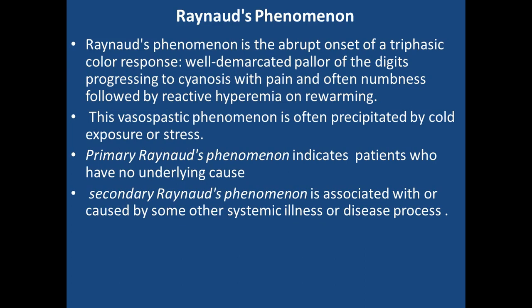Treatment of Buerger's disease is primarily smoking cessation; angioplasty and surgical options are very limited. Approximately 50% of patients will end up with amputation.